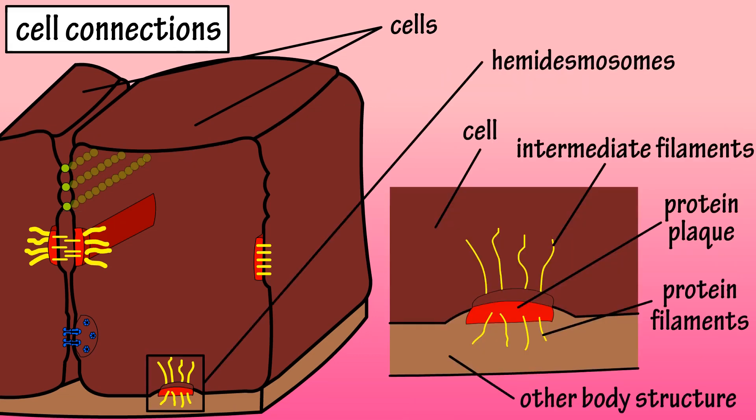Hemidesmosomes are similar to spot desmosomes in that they consist of intermediate filaments connected to a protein plaque, with protein filaments extending outward and connecting the cell to another body structure. And that covers the basics on cell connections.